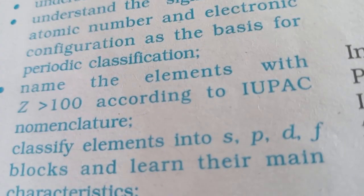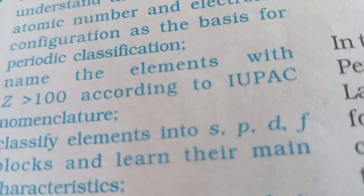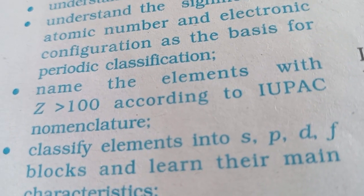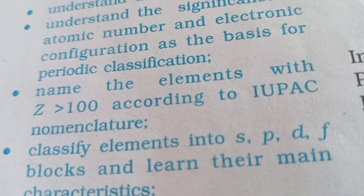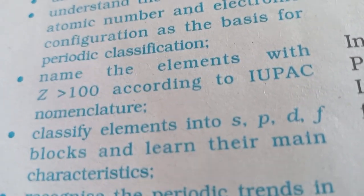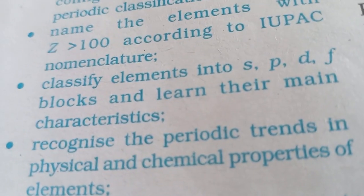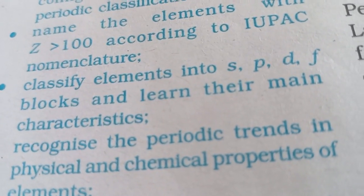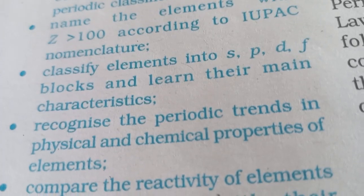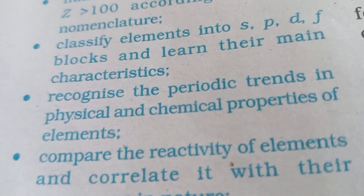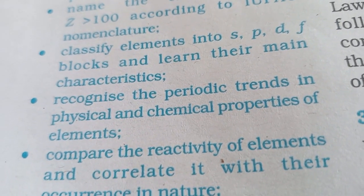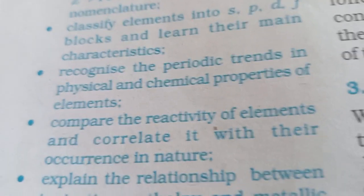You will be able to name the elements with Z more than 100 according to IUPAC nomenclature. You will be able to classify elements into S, P, D, and F blocks and learn their main characteristics. You will also be able to recognize the periodic trends in physical and chemical properties of elements.